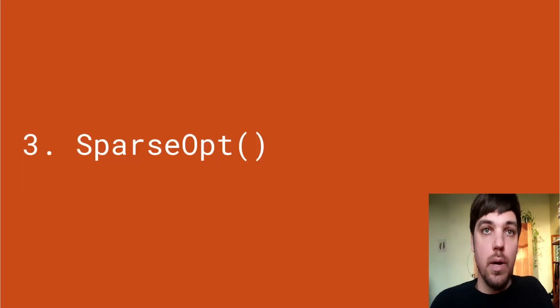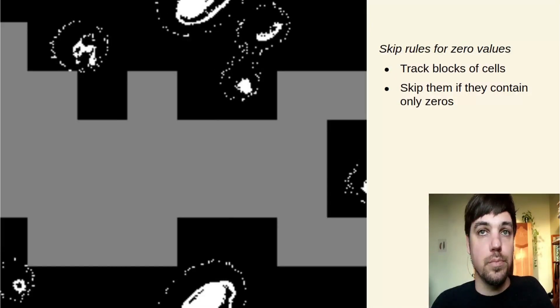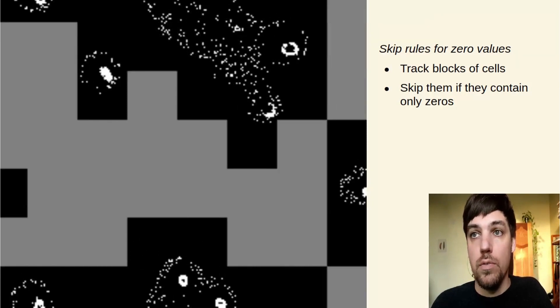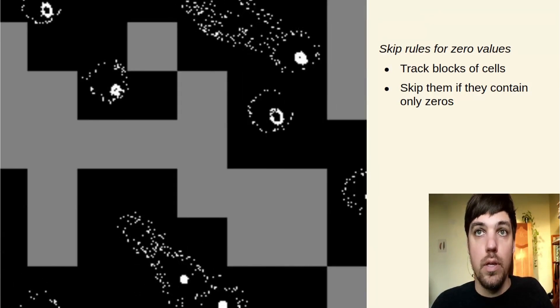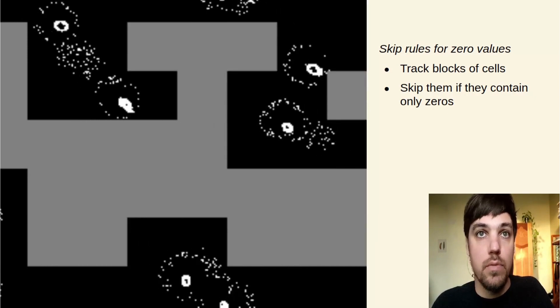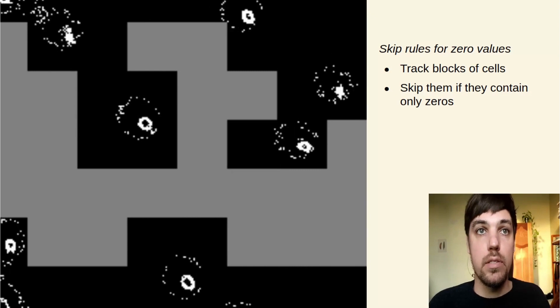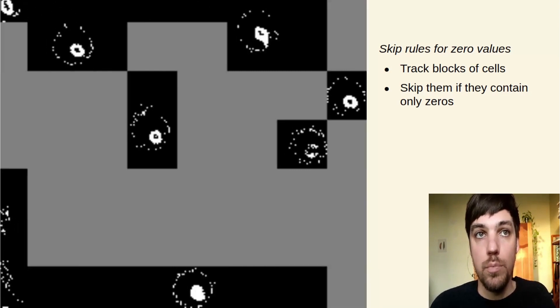The third optimization is sparse opt, which is a flag we can pass in to the simulation. This just skips rules for zero values and zero values in the neighborhood. It tracks whole blocks of cells and skips them if they contain only zeros. You can see that in the grey areas of the visualization which aren't being run.